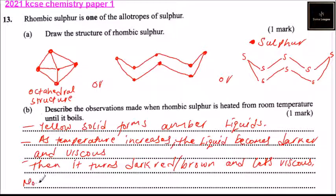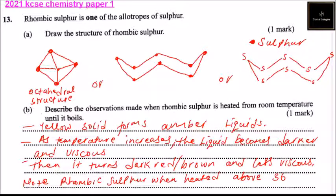You can note that rhombic sulfur when heated above 369 Kelvin gives monoclinic sulfur.